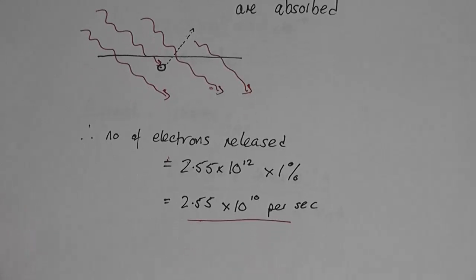Therefore the number of electrons released is 1% of that incident number which is 2.55 times 10 to the 12. Therefore the number of electrons released per second is 2.55 times 10 to the 10.